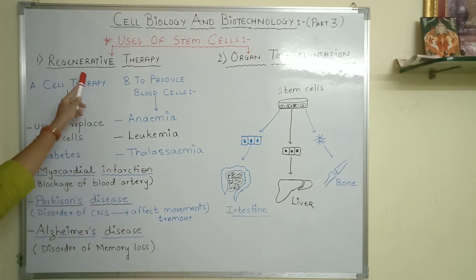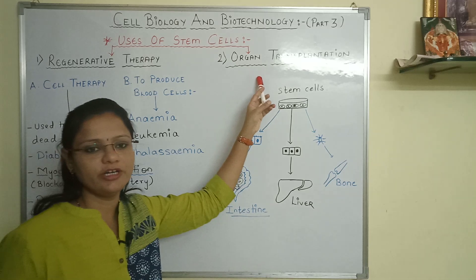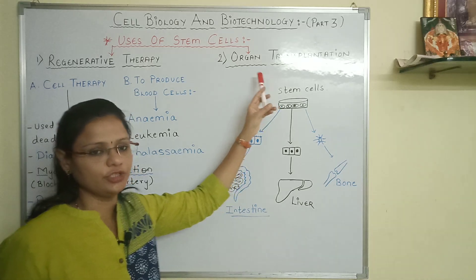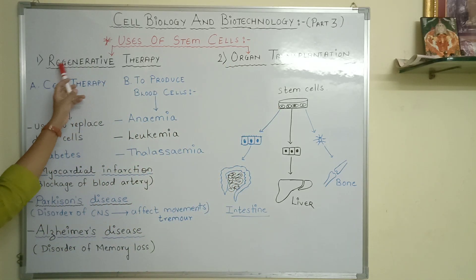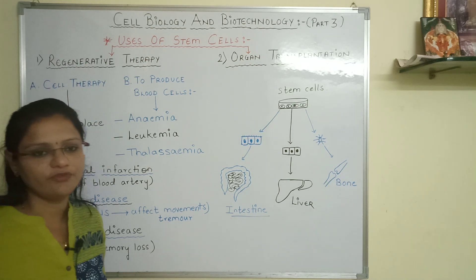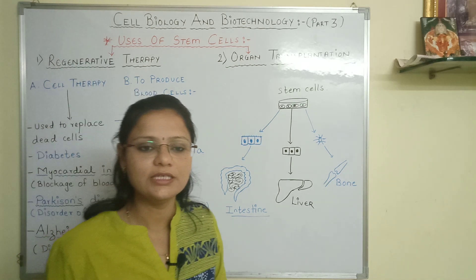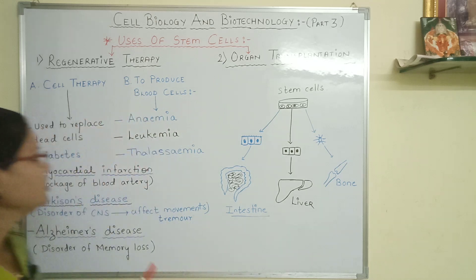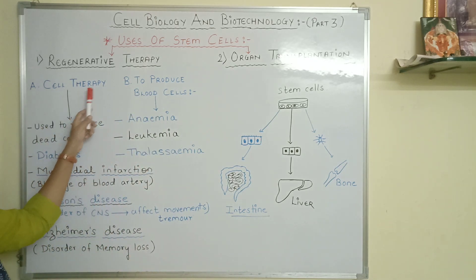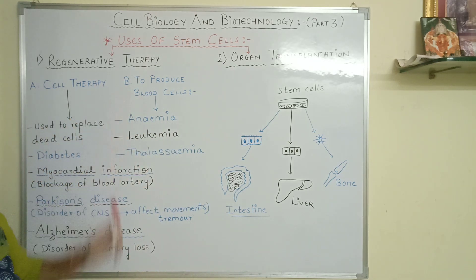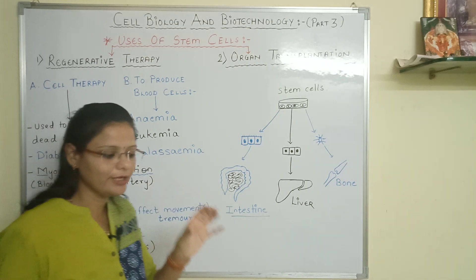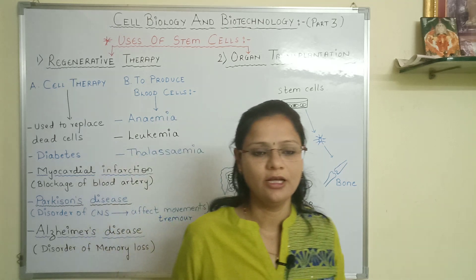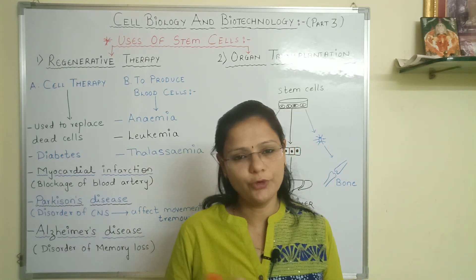The stem cells are used in two forms or two types: that is regenerative therapy and for organ transplantation. Regenerative therapy means to regenerate or re-generate. This includes cell therapy and producing blood cells. First we will see cell therapy.